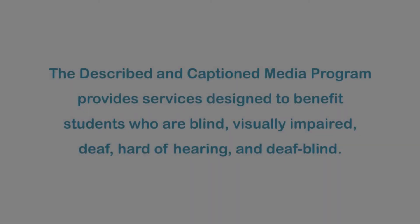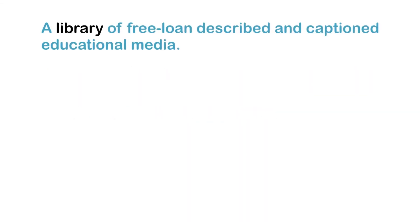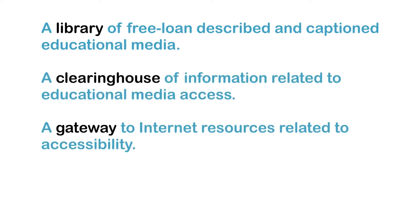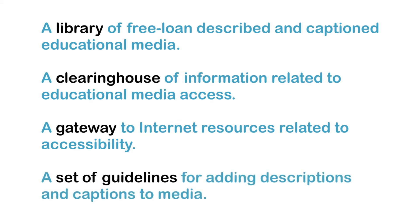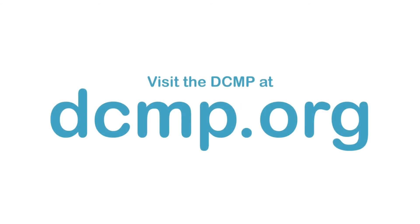The Described and Captioned Media Program provides services designed to benefit students who are blind, visually impaired, deaf, hard of hearing, and deaf-blind. These services include a library of free loan described and captioned educational media, a clearinghouse of information related to educational media access, a gateway to internet resources related to accessibility, and a set of guidelines for adding descriptions and captions to media. There are no user registration or service fees. Visit the DCMP at DCMP.org.